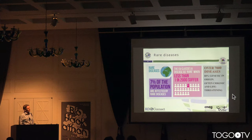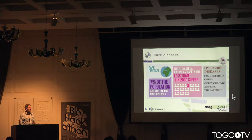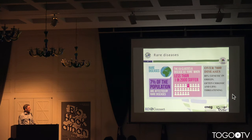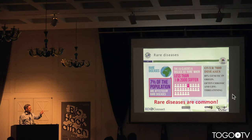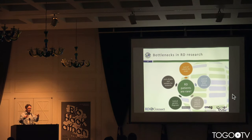What is a rare disease? A rare disease in Europe is defined as a disease in which less than 1 in 2,000 people are affected by that particular disease. But there are currently over 7,000 rare diseases — and this means that approximately 7% of the population will be affected by a rare disease at some point in their life, meaning rare diseases are actually relatively common when you cluster them all together.